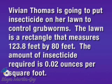Vivian Thomas is going to put insecticide on her lawn to control grub worms. The lawn is a rectangle that measures 123.8 feet by 80 feet. The amount of insecticide required is 0.02 ounces per square foot.